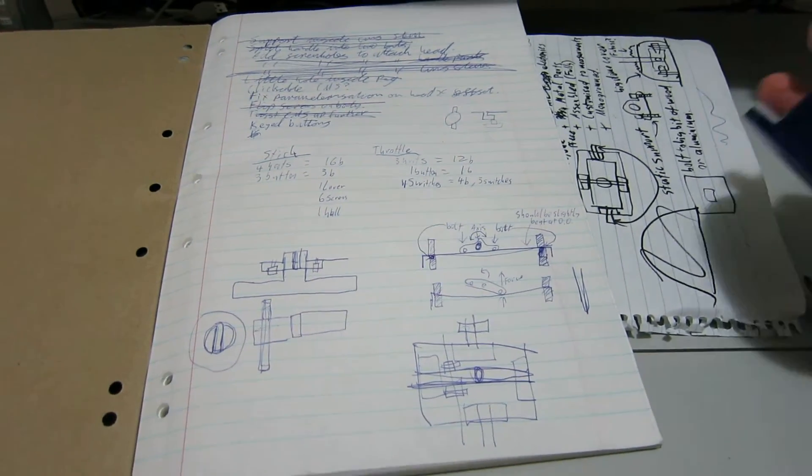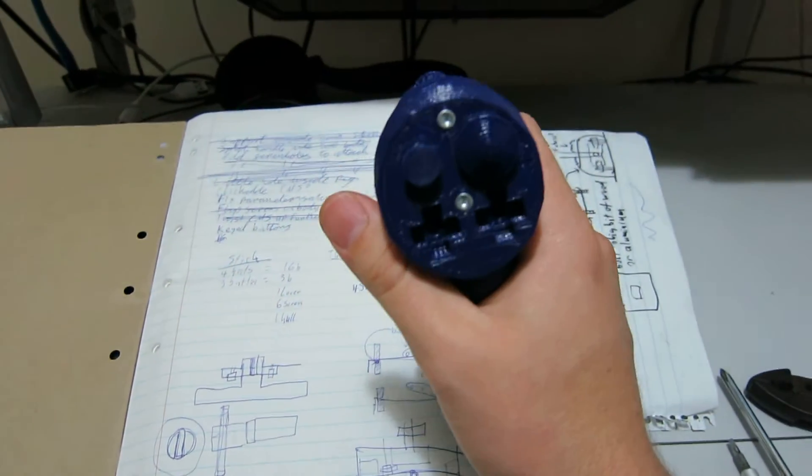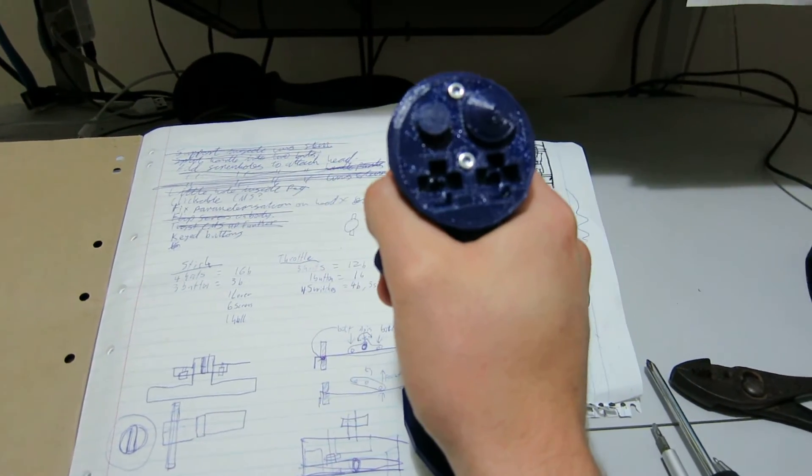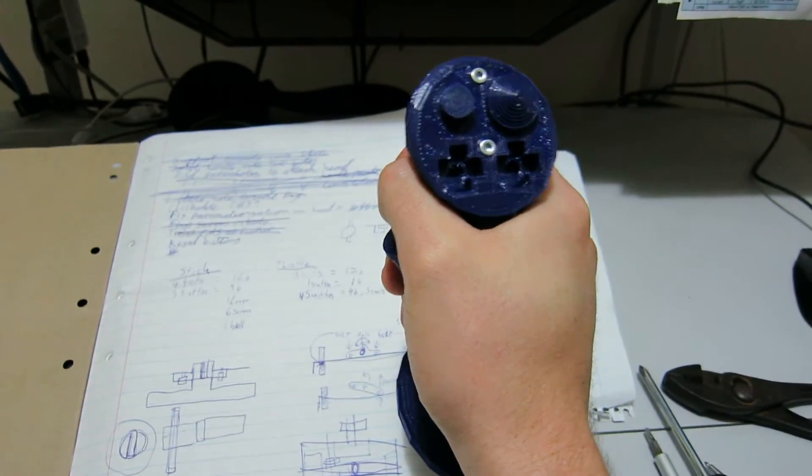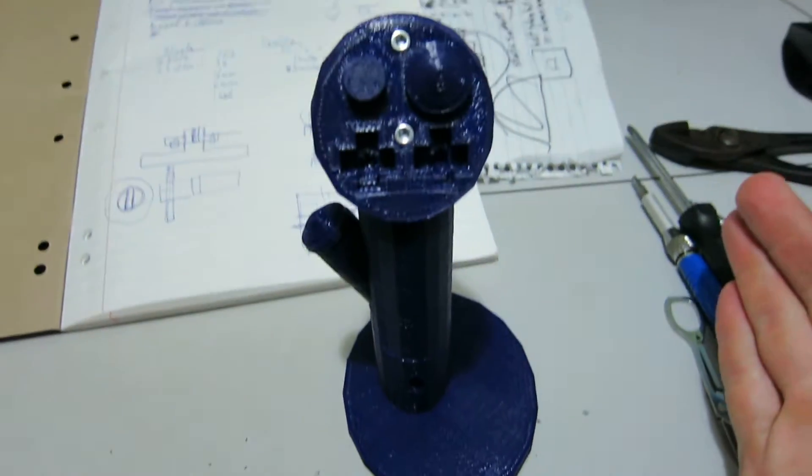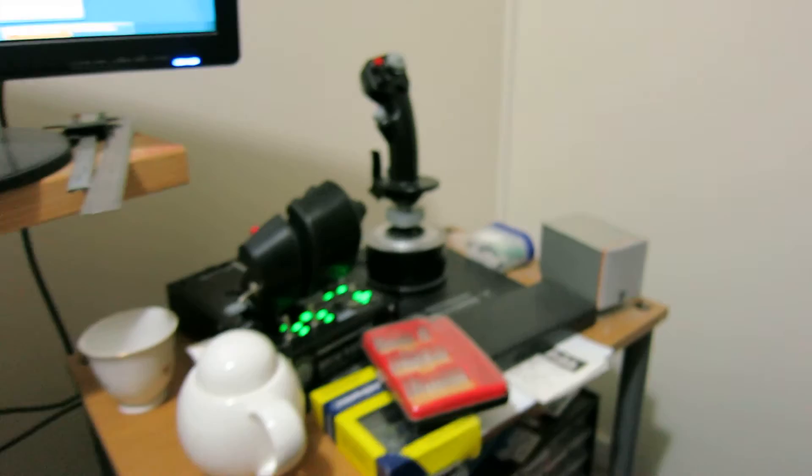A big problem with joysticks that's plagued everyone who's ever tried to make one is how to center the stick in the middle. You need to provide force such that the resting position of the stick is flat and level, like over here.